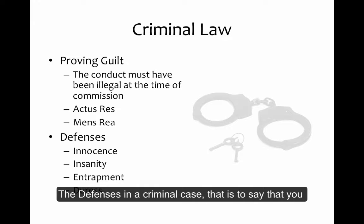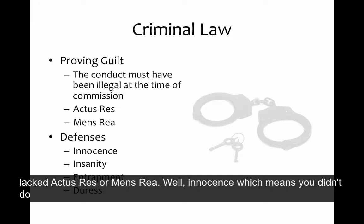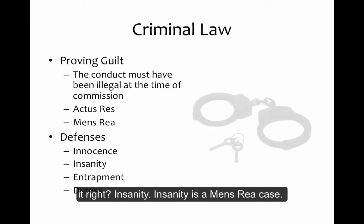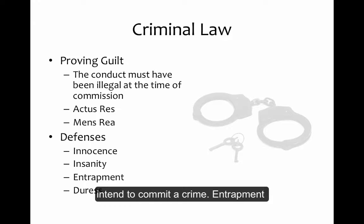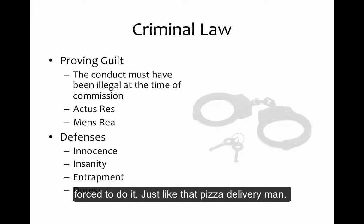The defenses in a criminal case say that you committed the act but you lack actus reus or mens rea. Innocence means you simply didn't do it. Insanity is a mens rea defense — you don't have the mental capacity to intend to commit a crime. Entrapment is an actus reus question — you were not voluntary in your activity. And duress is also actus reus — you were forced to do it, just like that pizza delivery man.